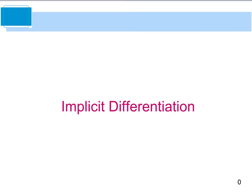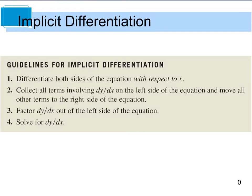With our implicit differentiation, we're going to be given some guidelines. For step one, we are going to differentiate both sides of the equation with respect to x. Once we've done that, we're going to collect all of our dy/dx terms on the left side of the equation and move everything else to the right side. Then we're going to factor out any dy/dx's that we can from the left, and then we're going to solve or isolate the dy/dx in the end. That is our ultimate goal — to get dy/dx by itself and everything else on the other side. Let's look at our first example.